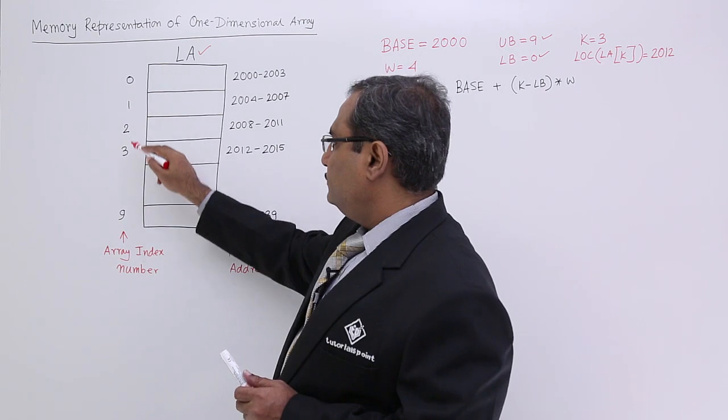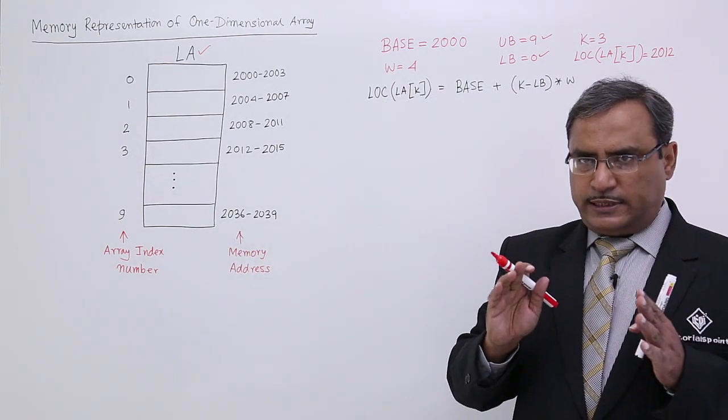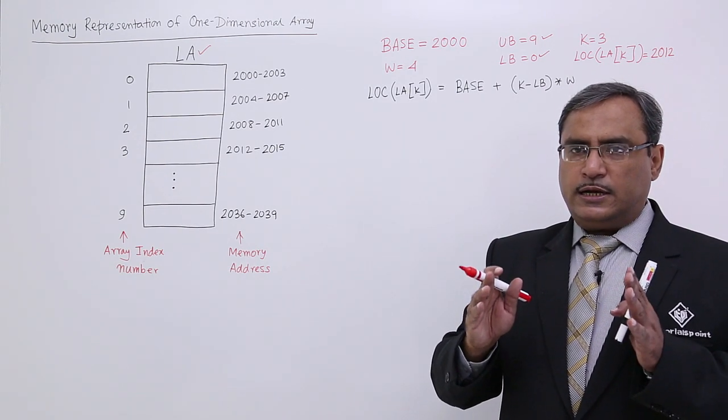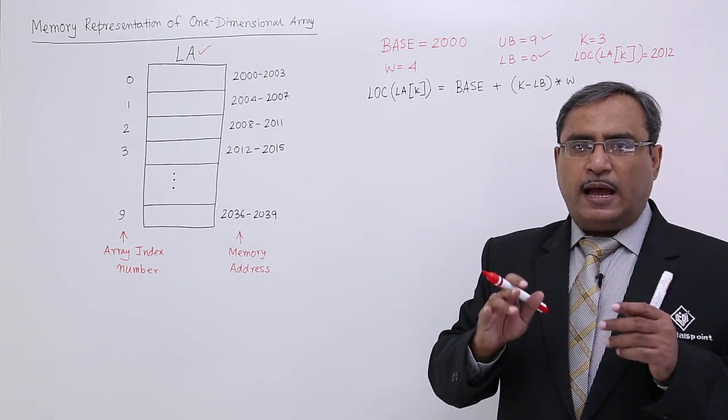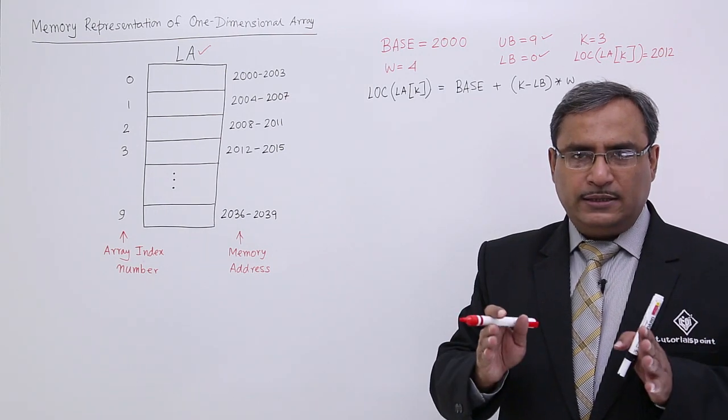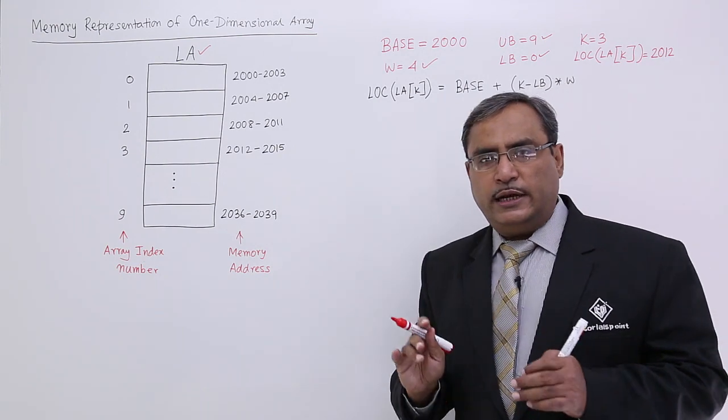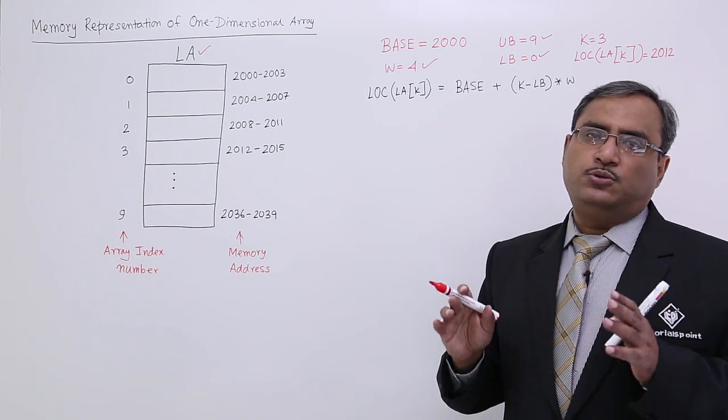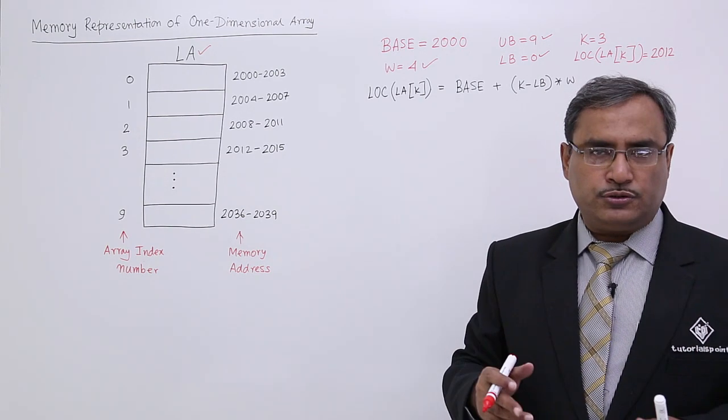This is my array index number and this is my memory address. Here, for the sake of simplicity, we have considered that this particular data type of the data which is going to be stored inside the array is having a size of 4 bytes. W is equal to 4, that means width is equal to 4. And also, we are considering that the starting base address of this array inside the computer's memory is 2000. I could have taken that one as 7000 also, no issues.